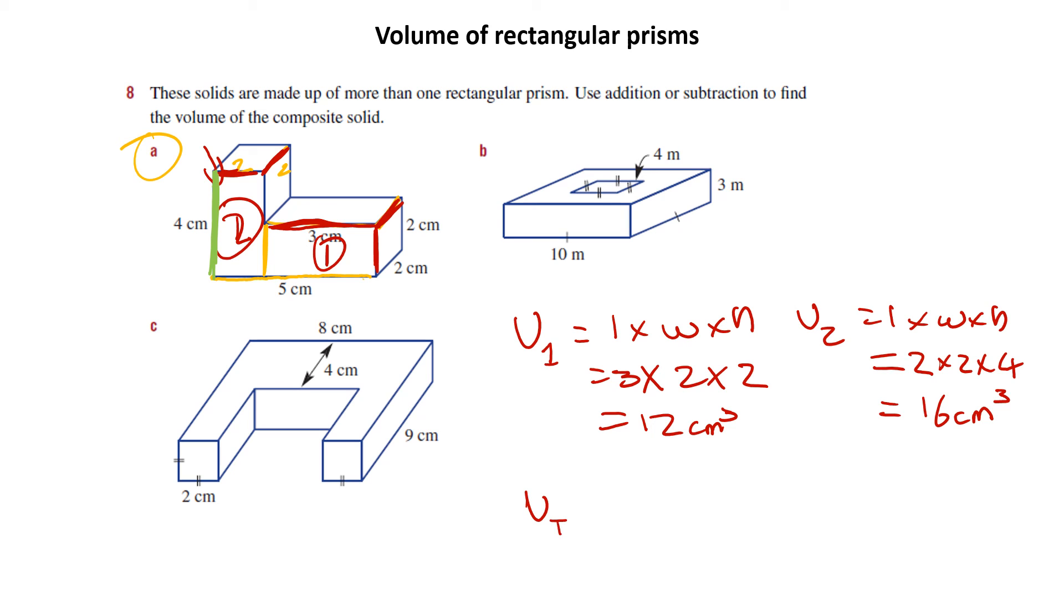So I'm going to go V total equals V1 plus V2. That's 12 plus 16. That's going to be 28. Remember, centimeters cubed.